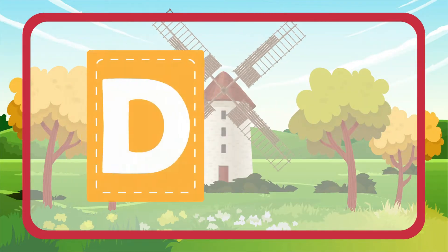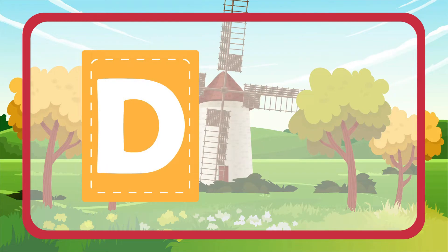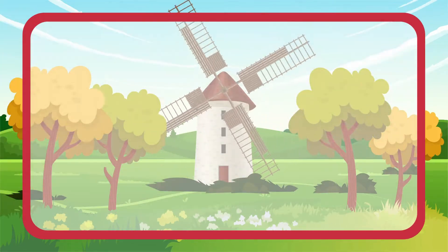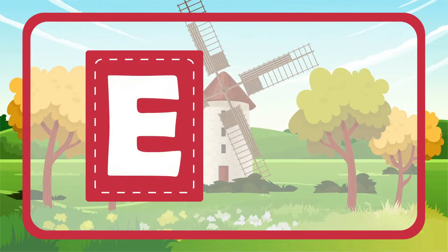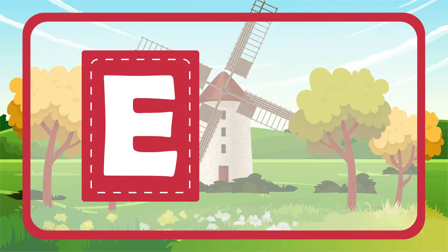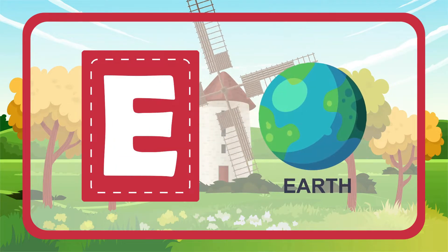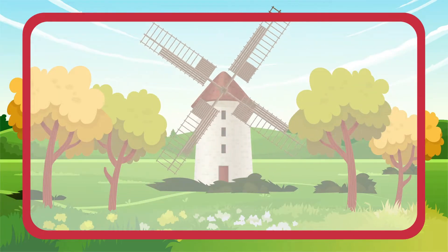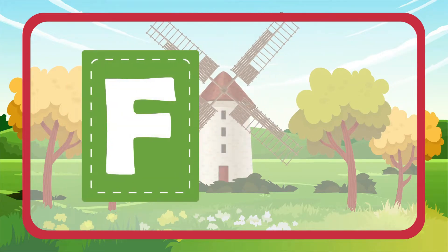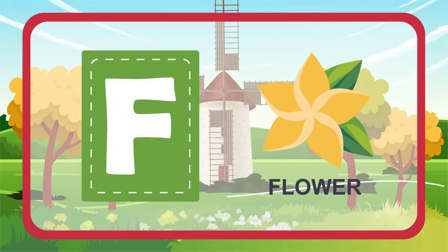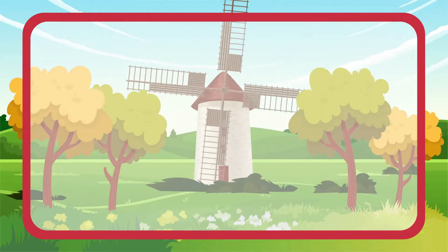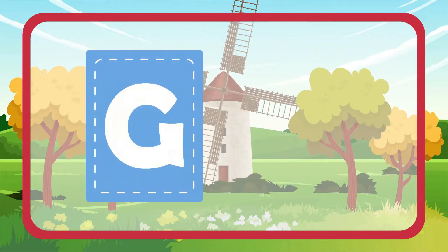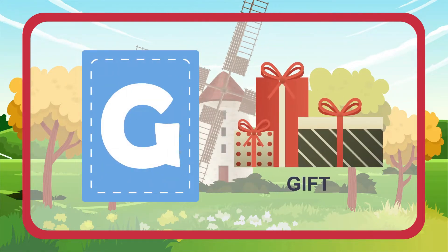D is for Donut. E is for Earth. F is for Flower. G is for Gift.